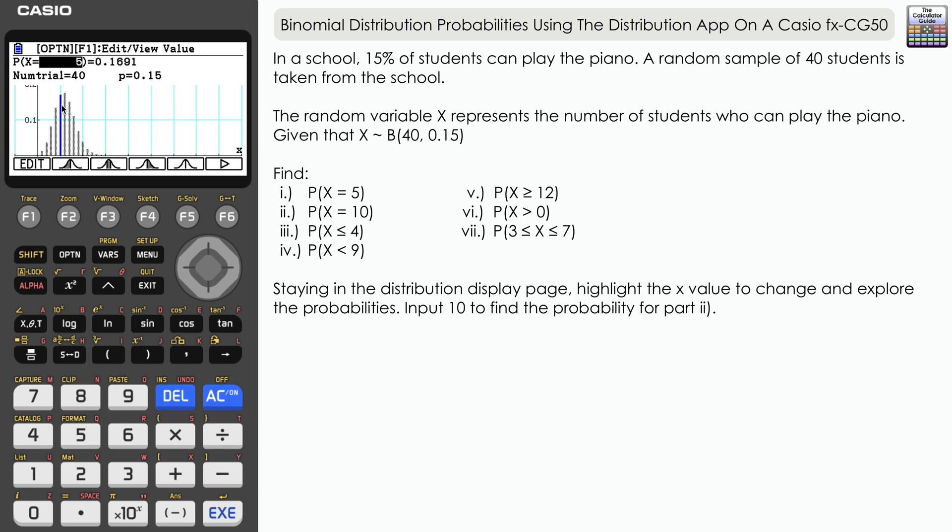But if we have a look next to it, 6 is even taller. So 6 is actually the most likely number of students we can find who can play the piano within our sample of 40. And we can explore all the values as well, 7 and so on. Let's go to the second probability.